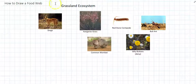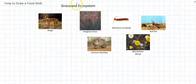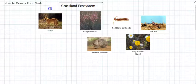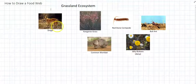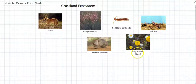So what we'll do is we'll use these example species here to make our food web. And these species all come from a grassland ecosystem in Australia. So we've got a dingo, kangaroo grass, centipede, a bull ant, a daisy plant called billy buttons, and the wombat.